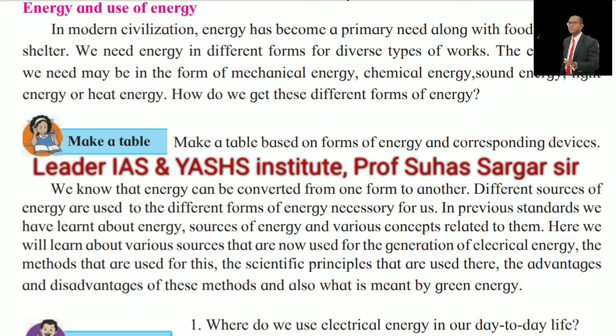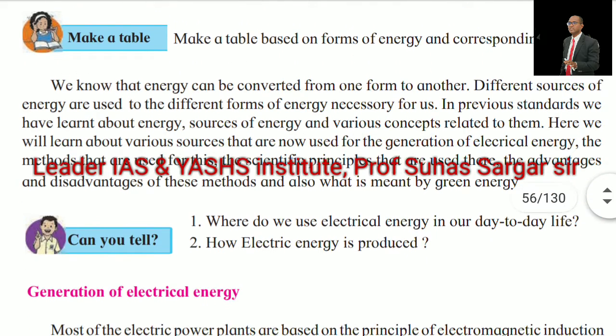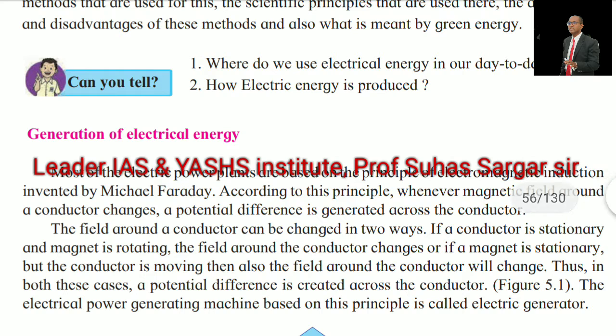Different sources of energy are used to obtain different forms of energy necessary for us. In previous standards, we have learned about energy, sources of energy and various concepts related to them. Here we learn about various sources that are now used for the generation of electrical energy, the methods that are used, the scientific principles involved, the advantages and disadvantages of these methods, and also what is meant by green energy. Where do we use electrical energy in our day-to-day life? How is electrical energy produced?